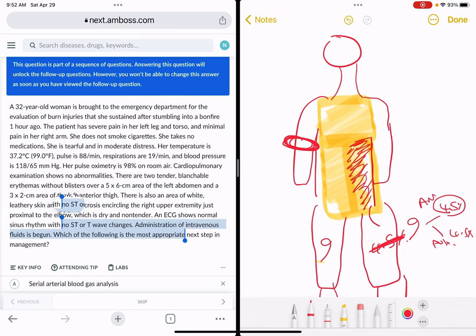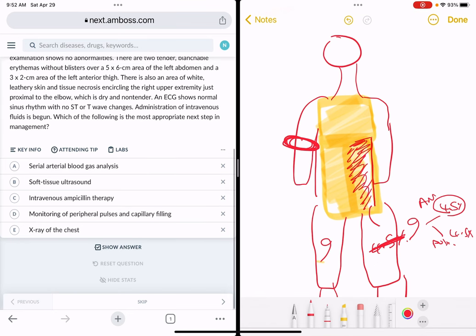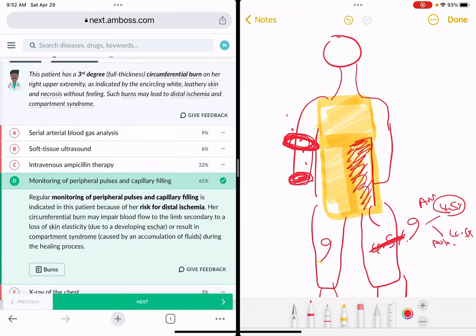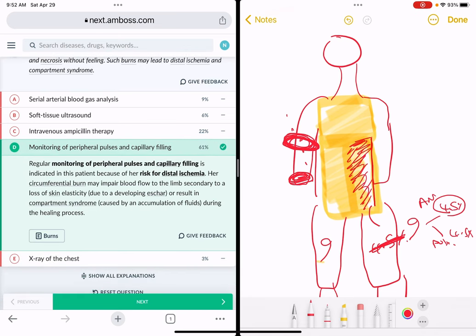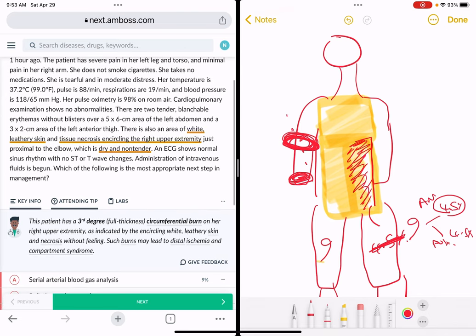The first thing you do after stabilizing the patient—we already did IV fluids and we already ruled out arrhythmias—the first thing I would do in such a patient is escharotomy, or cutting out the circumferential area of tissue necrosis. What we can do here as an alternative, because I want to make sure that her pulses in this extremity are good and not under pressure by the eschar, is monitoring the peripheral pulses and capillary filling. That's the answer. This is because of the circumferential third-degree burn or eschar in her right limb.